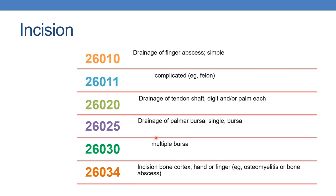For drainage of palmar bursa, single bursa, you need to assign 26025. And for multiple bursae, you need to assign 26030.